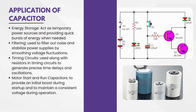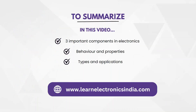One main application of a capacitor is it is used in timing circuits or delay circuits to create some amount of delay. This is the circuit of a timing circuit with a capacitor. It is also used to run and start some motors, and like we saw in the circuit, the capacitor is used for energy storage for some temporary amount of time. In this video we have understood and learned how the capacitor, inductor and resistor behave, and we have learned about the different types and applications. Thank you.